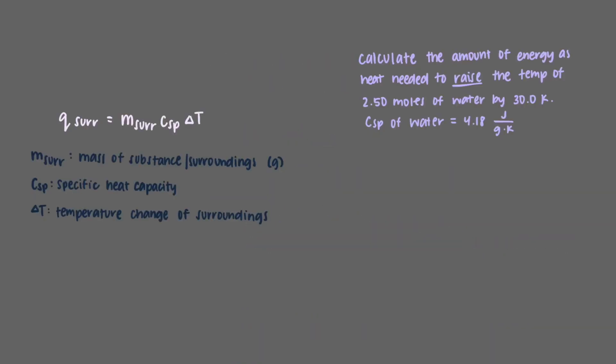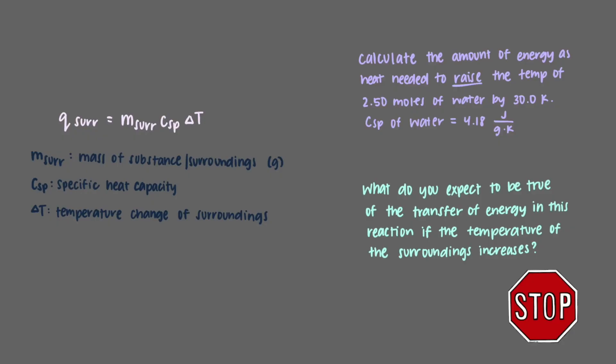Let's calculate the amount of energy as heat we would need to raise the temperature of 2.50 moles of water by 30.0 Kelvin. The heat capacity of water is 4.18 joules per gram Kelvin. First things first, what do you expect to be true of the transfer of energy in this reaction if the temperature of the surroundings increases?